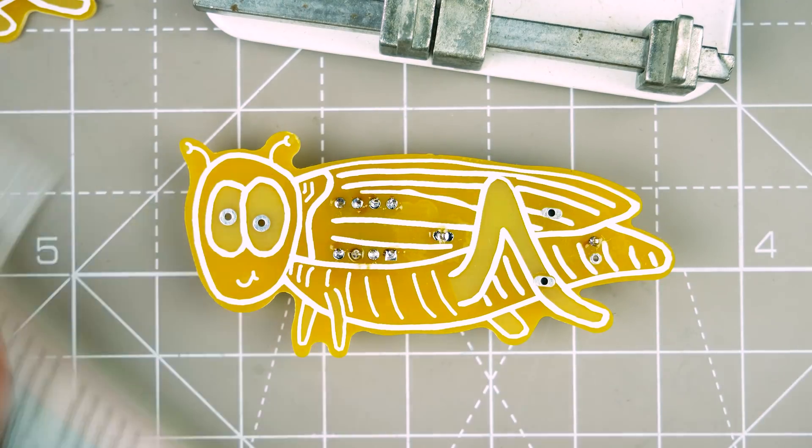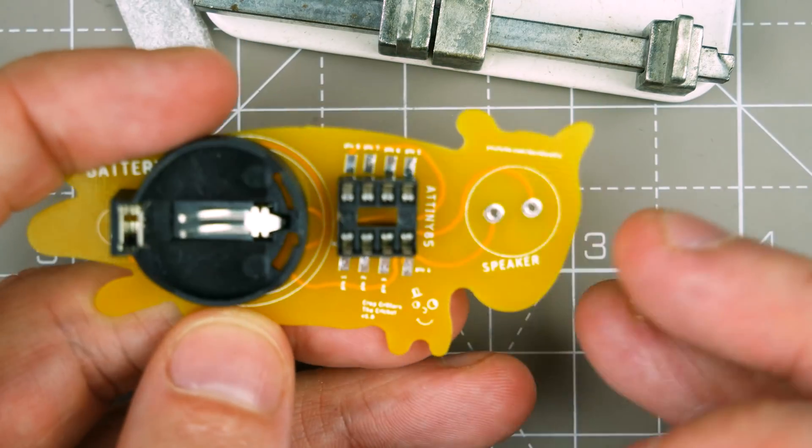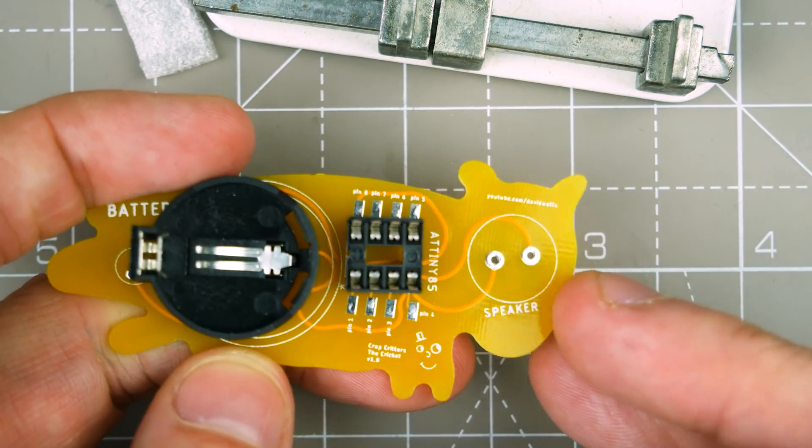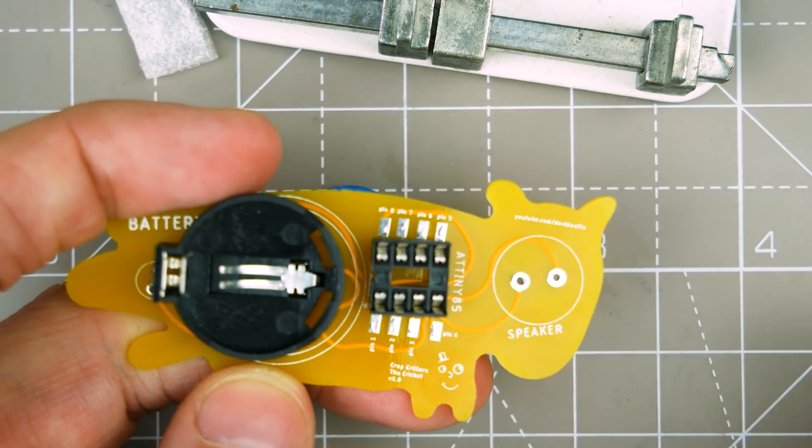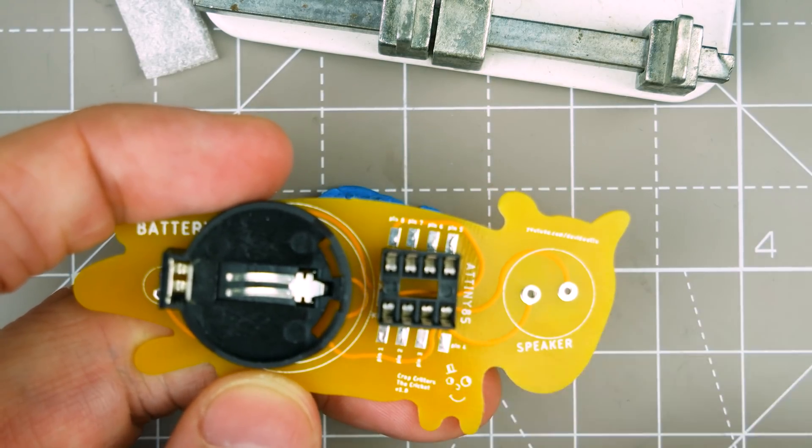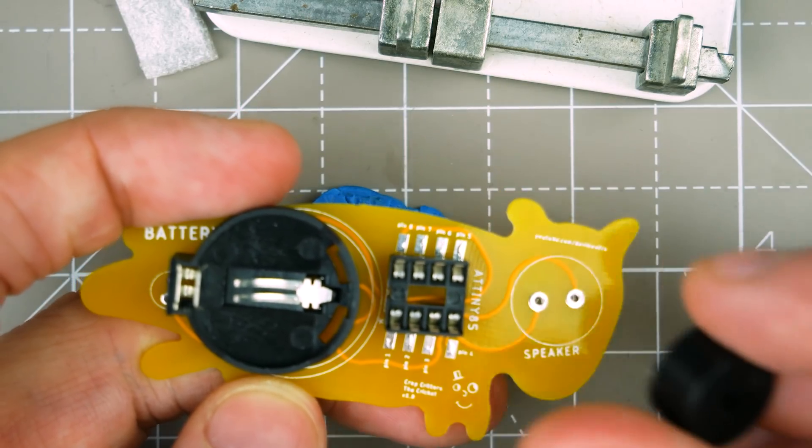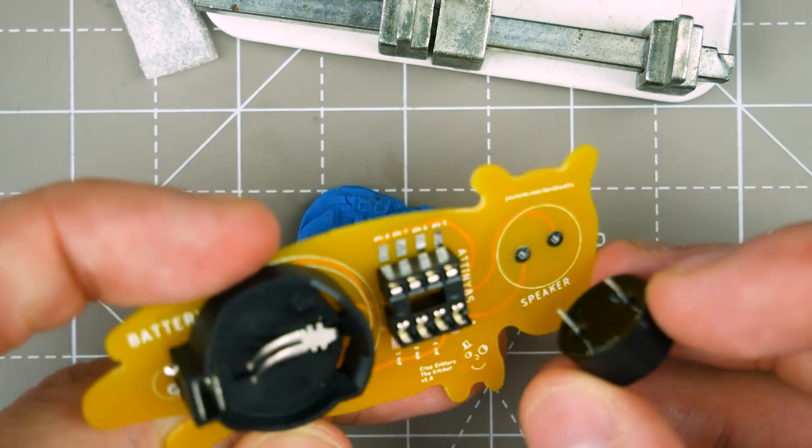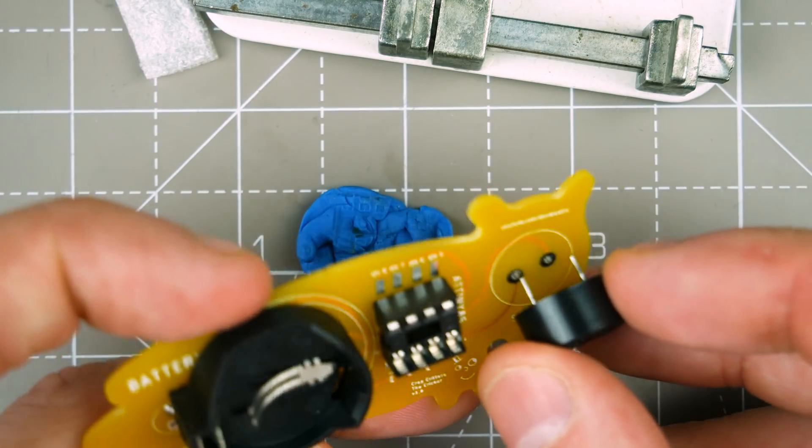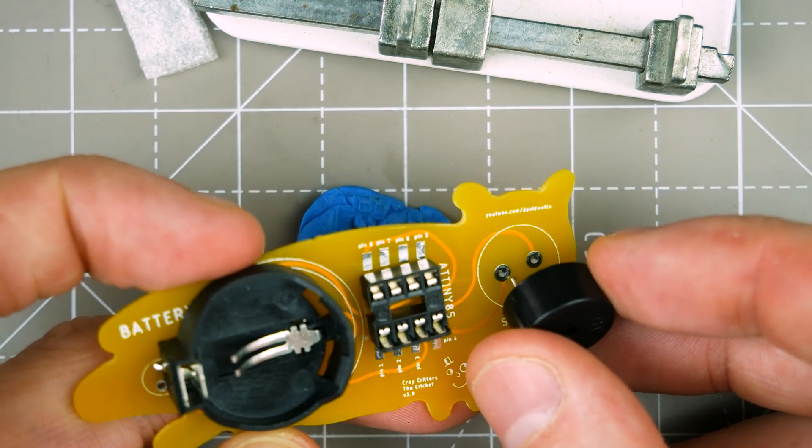Now we need to do the speaker so let's pop it out the breadboard. Put that in. I haven't actually marked the orientation but positive is the one on the furthest side. I know that because this one here is the ground pin. What we're going to have to do with this because they don't quite fit, and I knew that when I was designing it, but the problem is I didn't want the eyes that far apart because I'd have to make the board a lot bigger.